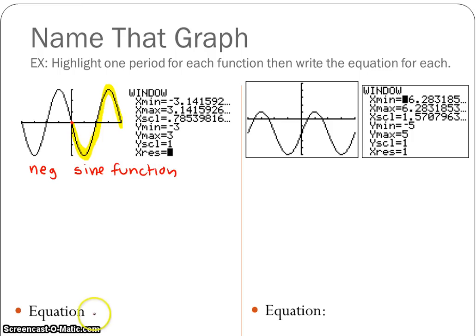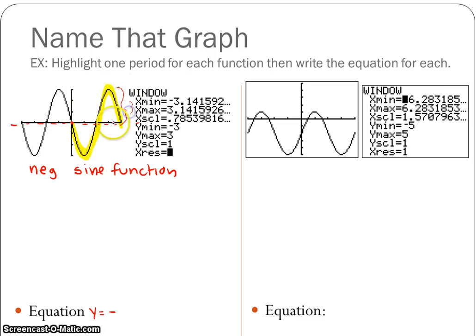I know that my a is going to be a negative number. So when I write my equation, it's going to be y equals a negative number times whatever my a is. My a has to do with the amplitude — how far it reaches from the midline. This graph doesn't have any vertical shift because half of it is above the x-axis and half below. The amplitude stretches 3 units up and 3 units down, so my a value is 3, making it negative 3.